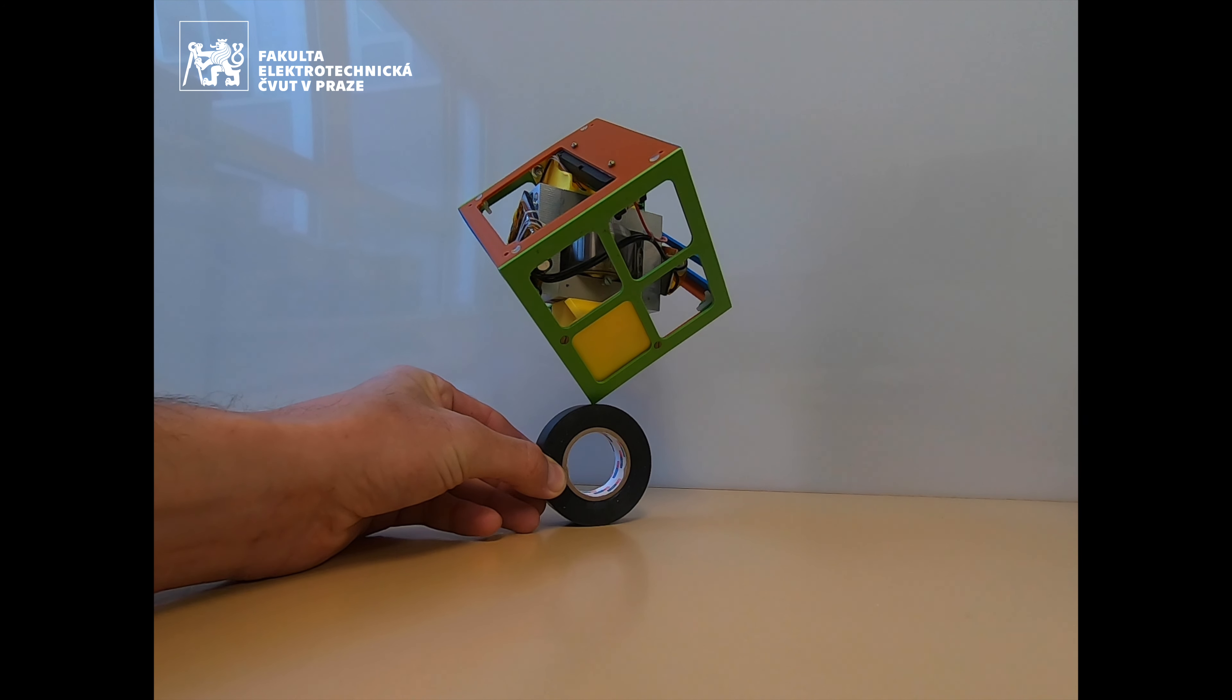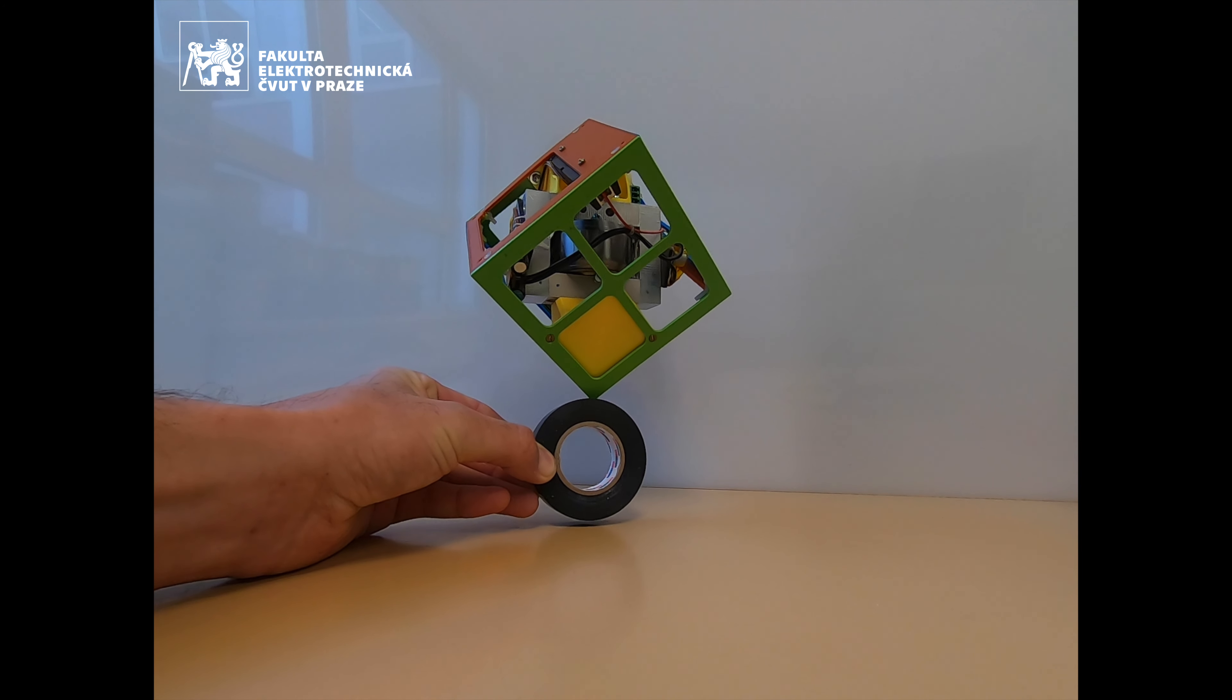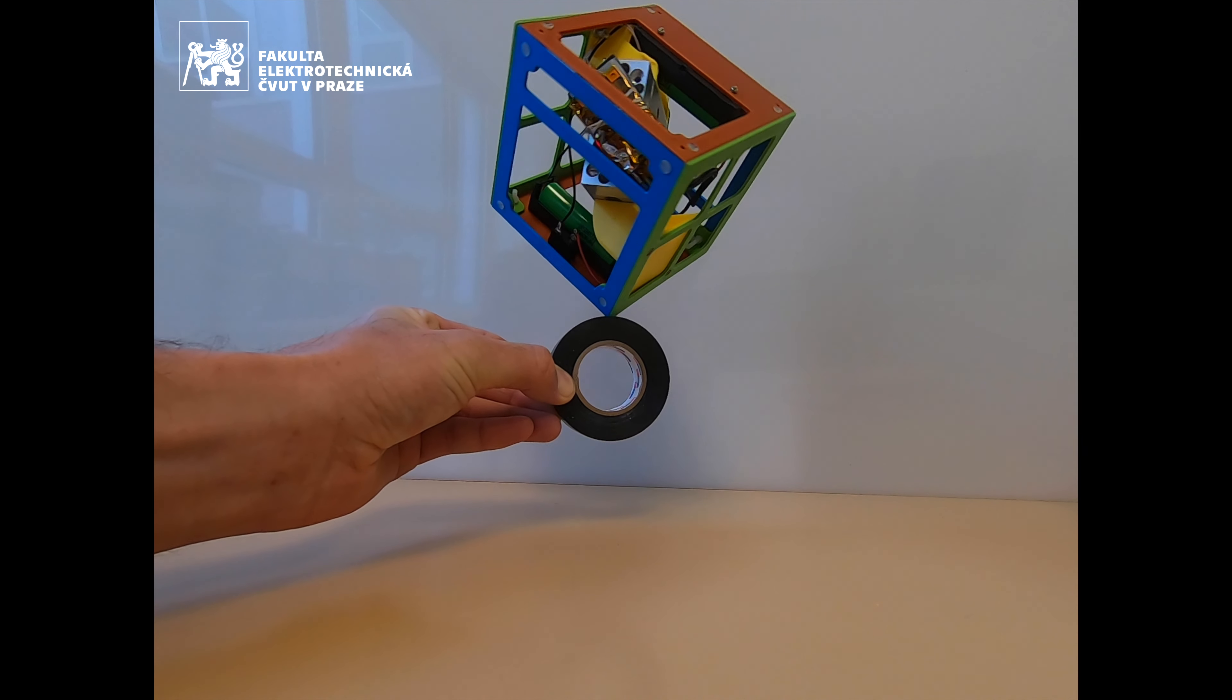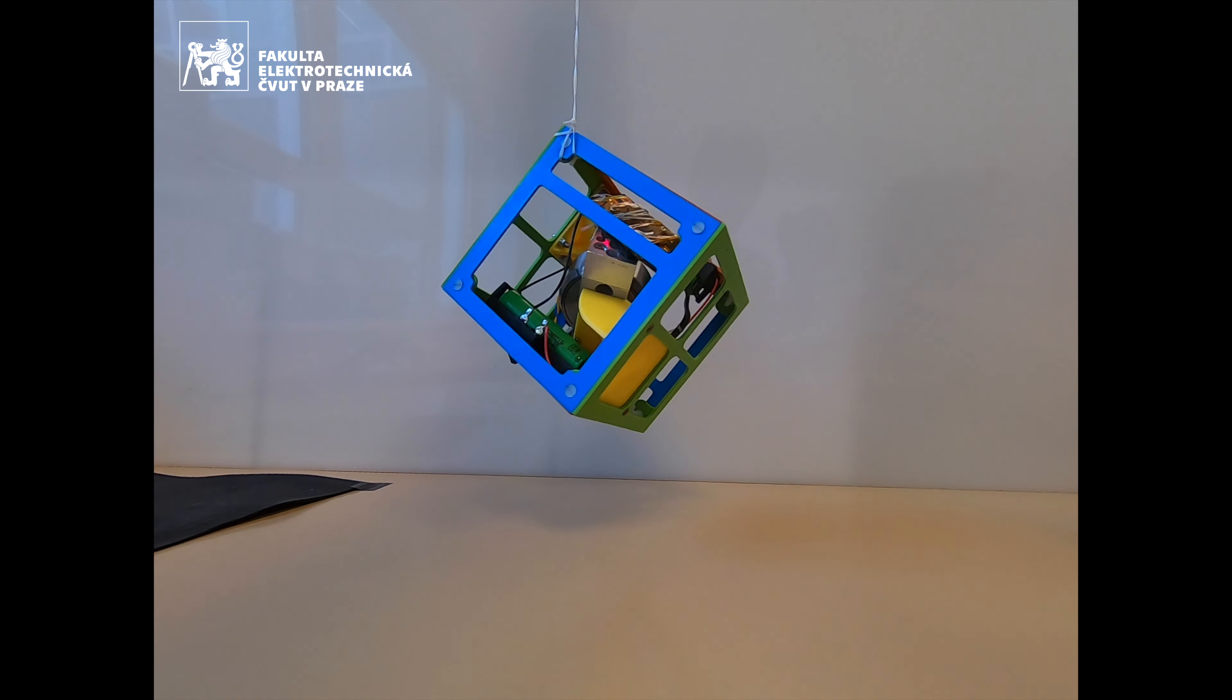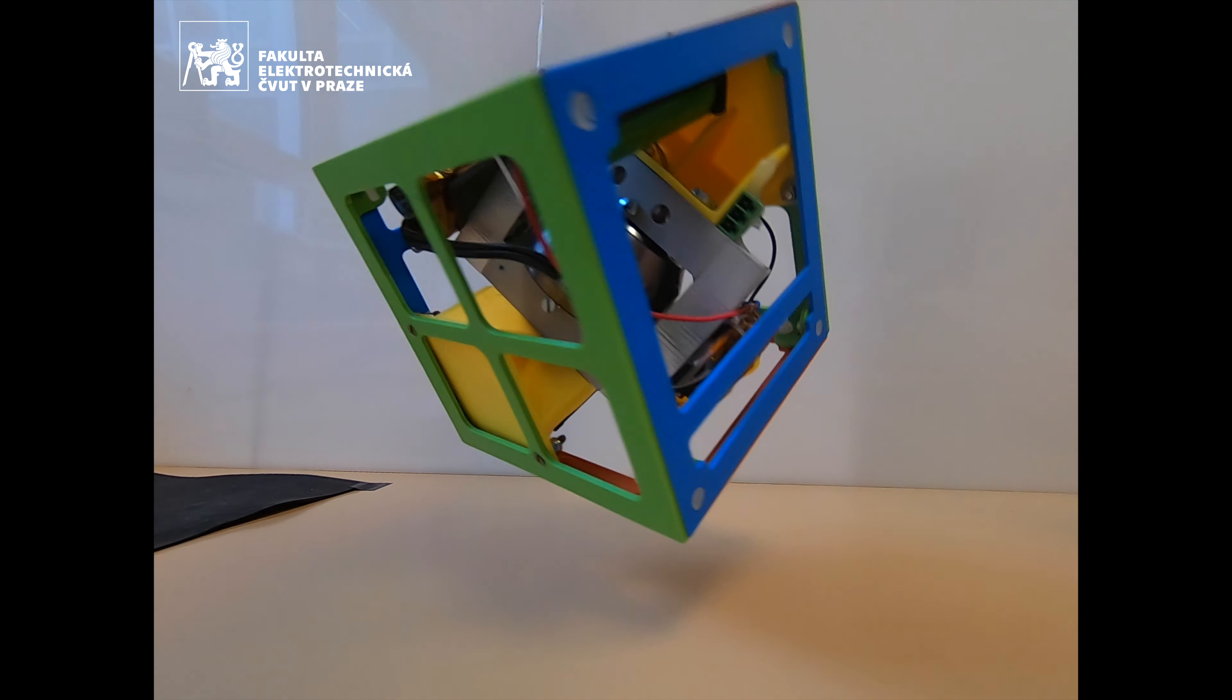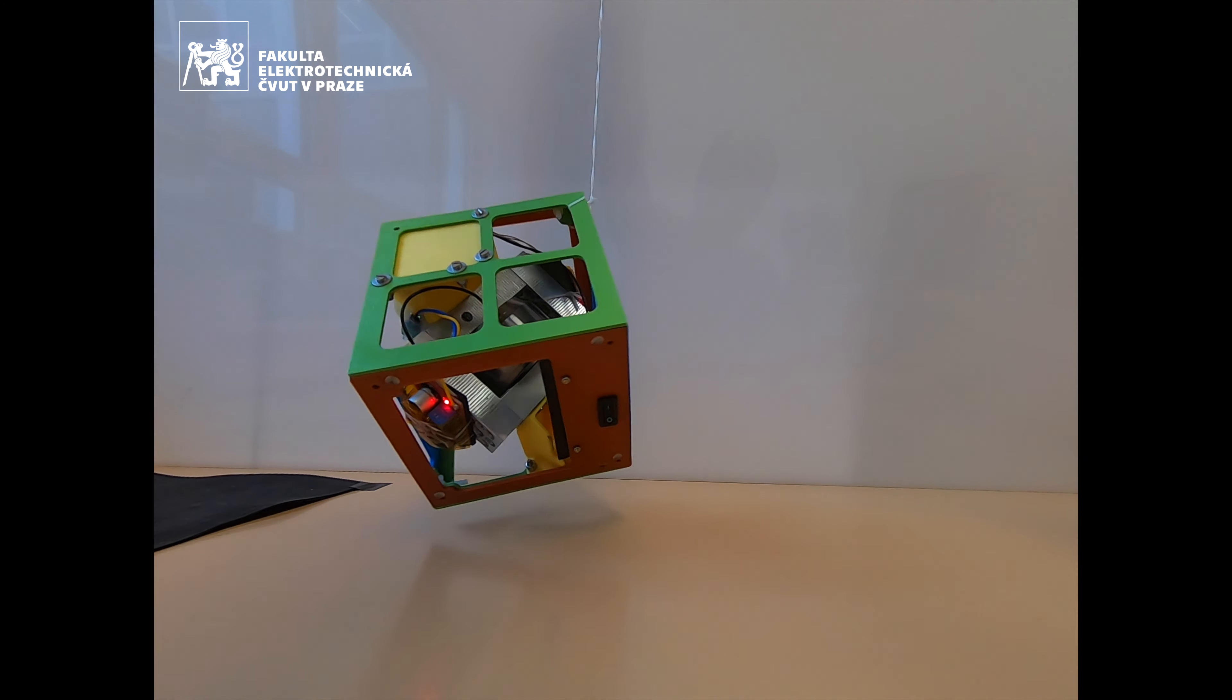And with all this, you can make a cube stand on its corner. It is just pure mechanical stabilization by a gyroscopic force which tends to keep its axis of rotation stable. In our case, the axis of rotation is aligned with the body diagonal of the cube.